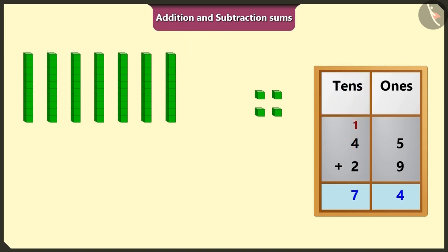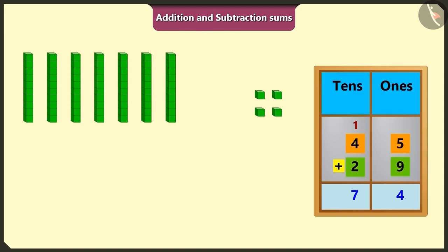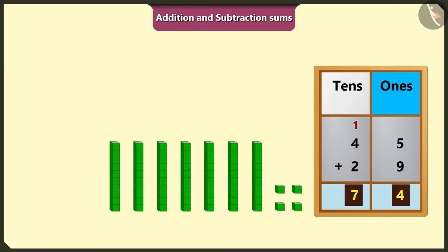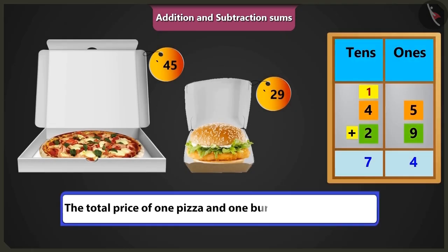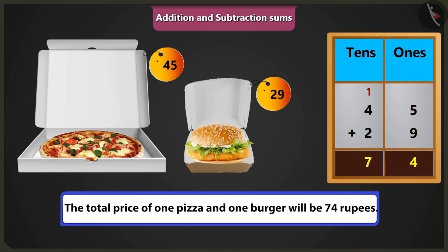So, in this way, if we will add 29 rupees to 45 rupees, it will be 7 tens and 4 ones means 74 rupees. So, the total price of 1 pizza and 1 burger will be 74 rupees.